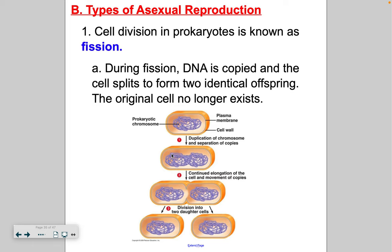There are several different types of asexual reproduction, and the first one is known as fission. This process occurs in prokaryotes. What happens is that the DNA goes through interphase and it's copied, and then the cell just elongates and eventually splits into two. The original cell no longer exists, and you end up with two daughter cells that are genetically identical to each other. Prokaryotes are unicellular organisms that do not have a nucleus or organelles — great examples are bacteria like E. coli.